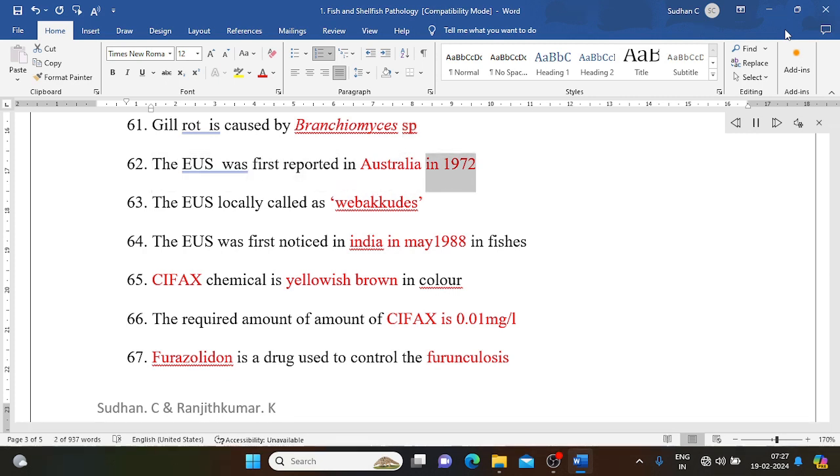The EUS was first reported in Australia in 1972. The EUS locally called as red spot disease. The EUS was first noticed in India in May 1988 in fishes. CIFAX chemical is yellowish brown in color. The required amount of CIFAX is 0.01 mg per liter. Furazolidone is a drug used to control the furunculosis.